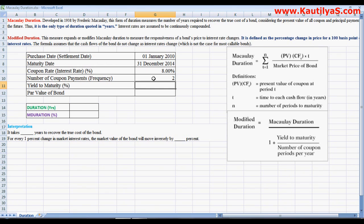Then yield to maturity on the particular bond is 10%, so face value or par value of a bond is 1000.